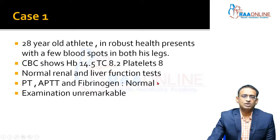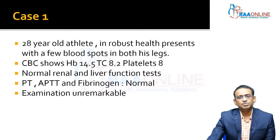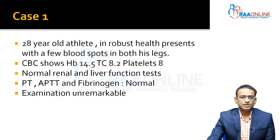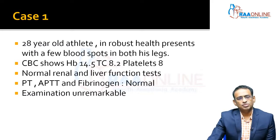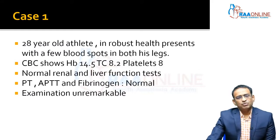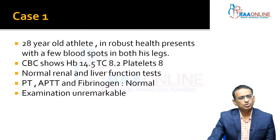Case 1 is a 28-year-old athlete in absolute robust health. He presents with a few blood spots in both his legs that he noticed while washing himself a couple of days ago. He thought it would go away but it didn't, so he presents to us in the emergency. His CBC shows a hemoglobin of 14.5, total count of 8.2, and a platelet count of 8,000. He is otherwise well — no fever, no weight loss — and has been in absolutely good health.